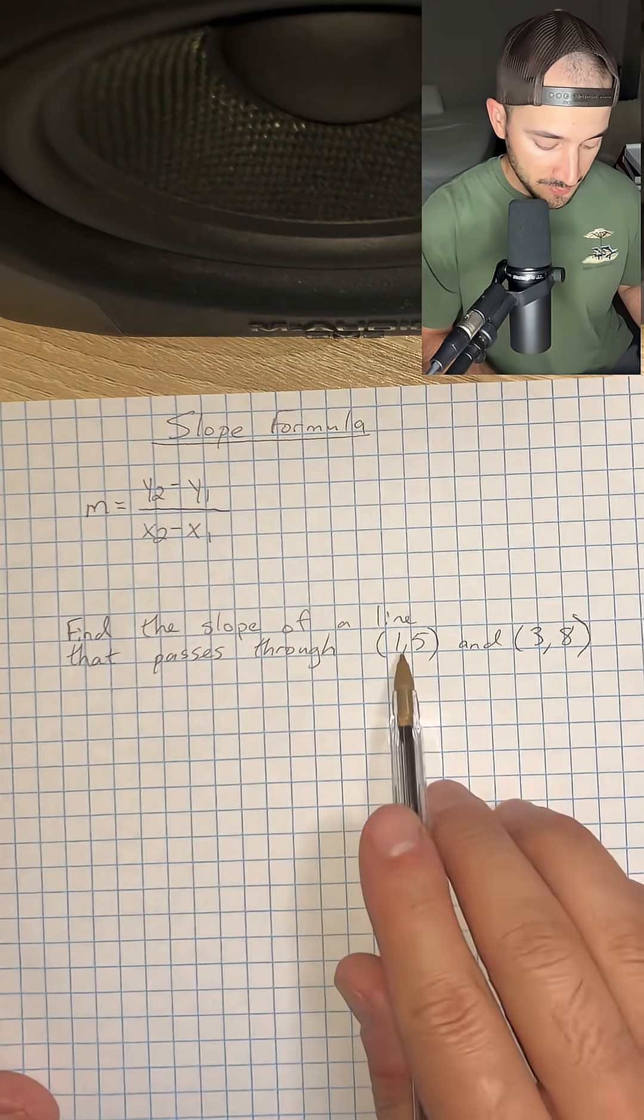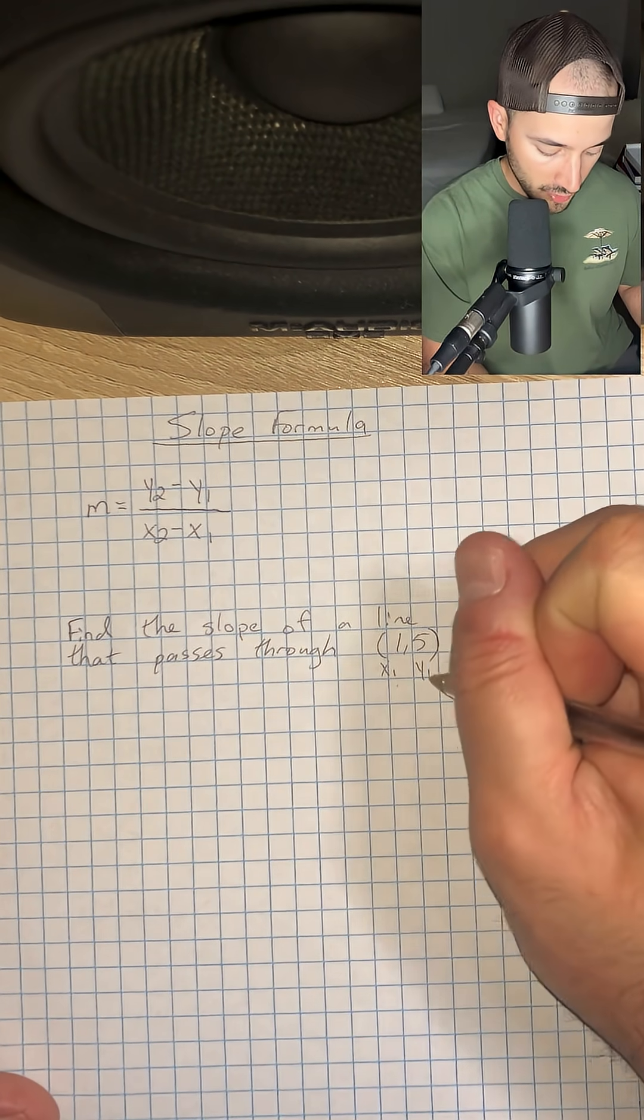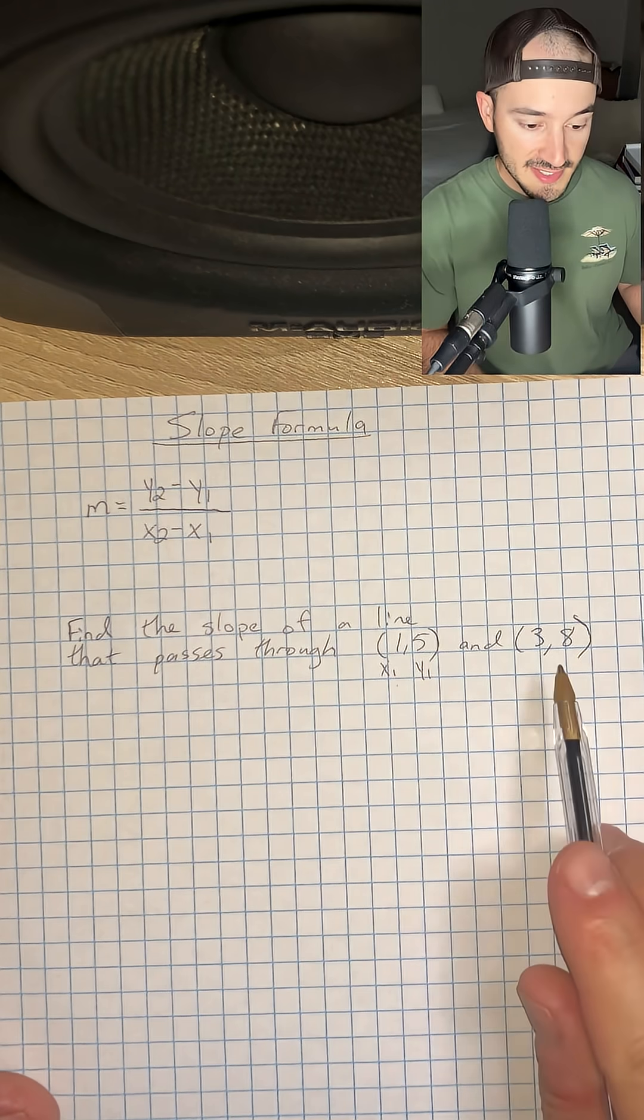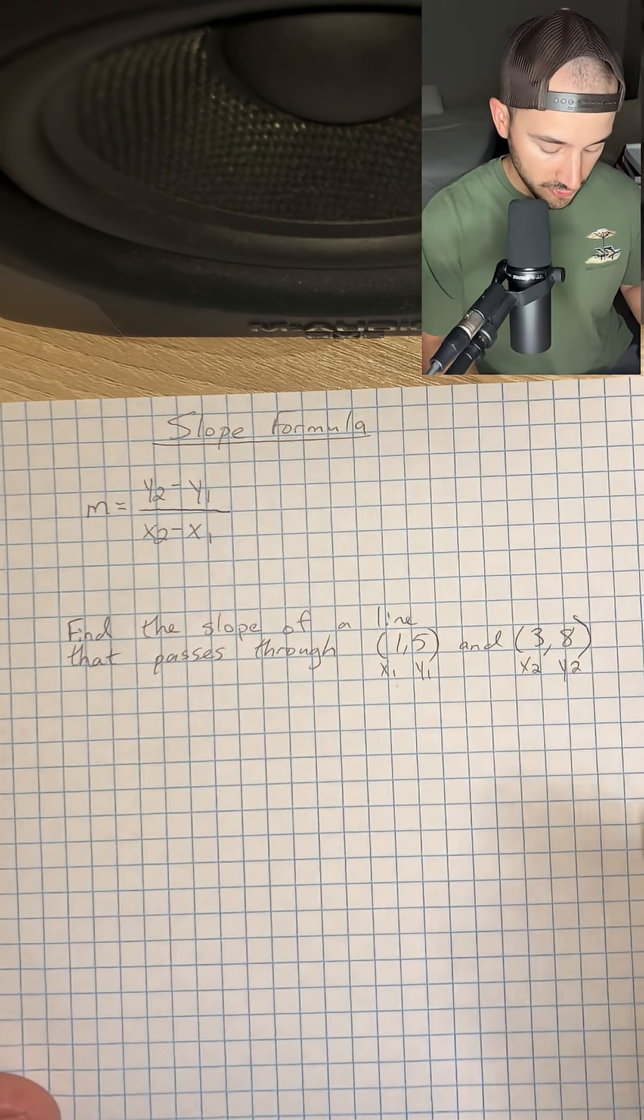What I'm going to do first is I'm going to label this first ordered pair as x1, y1, and then the second ordered pair as x2, y2.